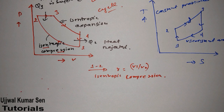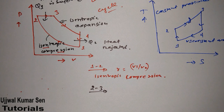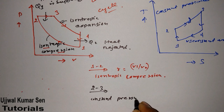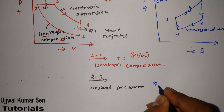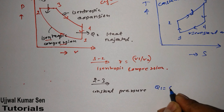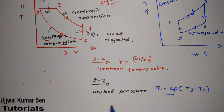Process 2 to 3 is the constant pressure process. Heat is supplied at constant pressure, therefore Q1 equals Cp times (T3 minus T2), because heat is supplied during this process.